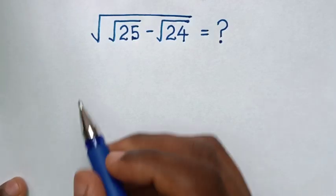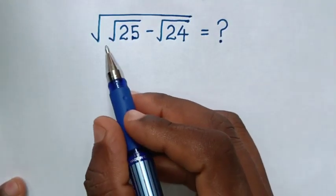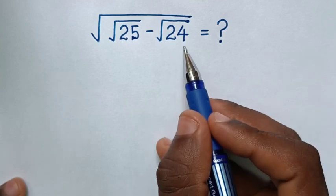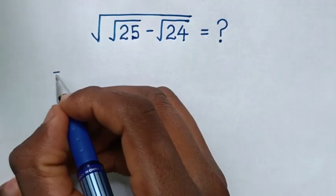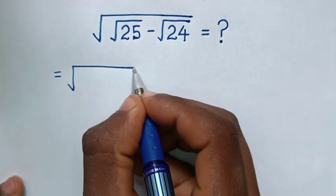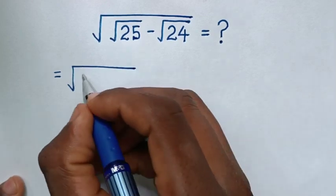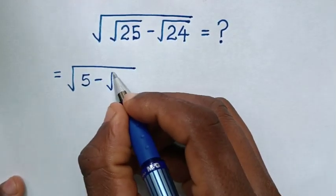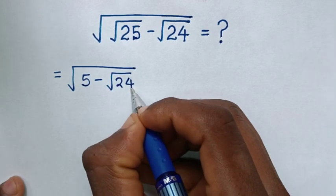Hello. How to solve square root of square root of 25 minus square root of 24? It will be equal to square root of — square root of 25 is 5 — then minus this square root of 24.